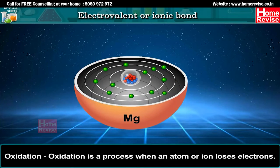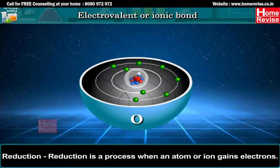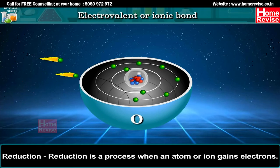Oxidation is a process when an atom or ion loses electrons. Reduction is a process when an atom or ion gains electrons.